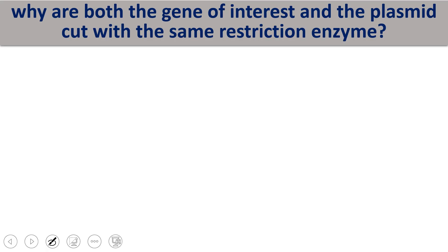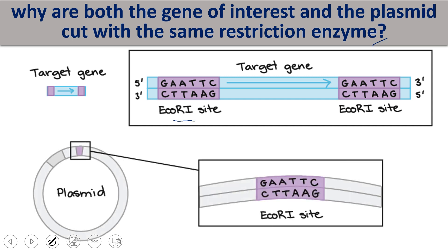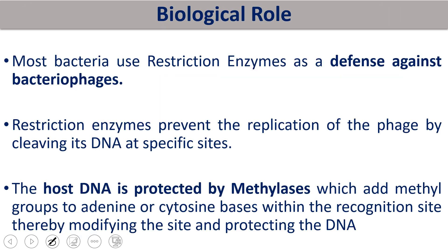When we select a gene of interest and a vector, both need to be digested with the same restriction enzyme. If the gene of interest is digested with EcoRI and the plasmid is also digested with EcoRI, both will have the same sticky ends and will join with each other very easily. That is why both the gene of interest and the vector must be digested with the same restriction enzyme.